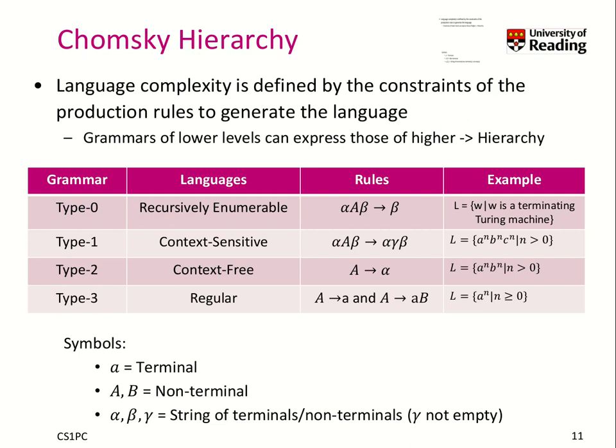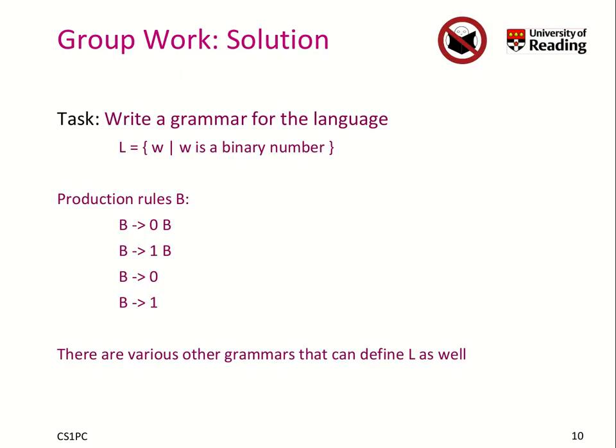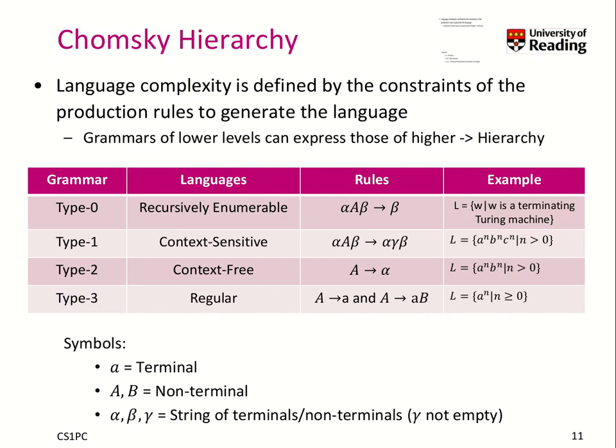The easiest language you could consider is regular languages. In regular languages, the rules that you can apply are A to a, and A to AB, which are pretty much the production rules we saw here, where A is a non-terminal. You can have on the left side only a single non-terminal — that's the symbol you want to replace — and on the right side you can have an arbitrary string.